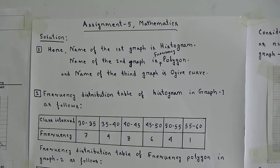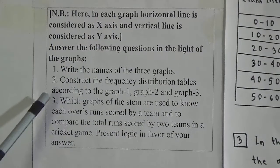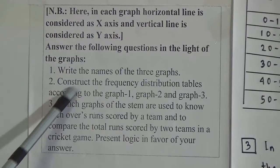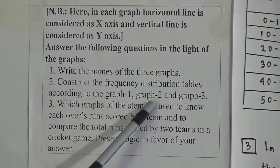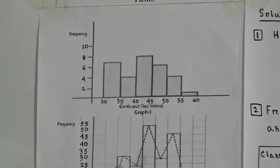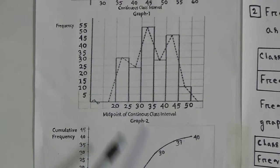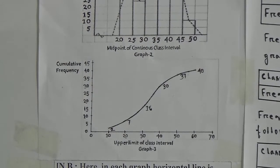We have solved question one. Now we will solve question two. At first we will see what the question is. In question two it is written: construct the frequency distribution tables according to graph one, graph two, and graph three. We will make the frequency distribution table for graph one and graph three.